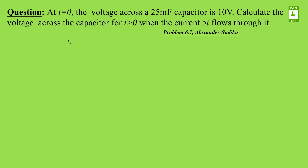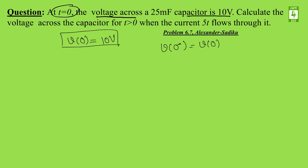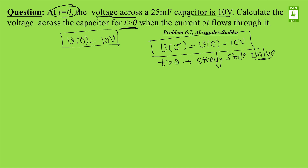Now see the numerical: at t = 0, the voltage across a 25 millifarad capacitor is 10 volts. So v(0) is given as 10 volts. The voltage across the capacitor at t = 0 means v(0⁻) = v(0) = 10 volts. Calculate the voltage across the capacitor for t greater than 0 — that is the steady state value — when the current of 5t milliampere flows through it.